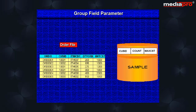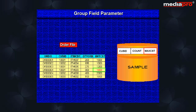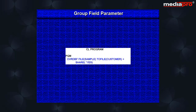First of all, we create a physical file sample having a record format with the required fields. Here we will include customer ID, an account field that will contain the total number of orders made by the customer, and a maximum value field that will contain the maximum cost per unit of the items ordered by the customer. The override database file command will override the file sample with the file customer that contains the actual data and also set the share parameter to star yes.